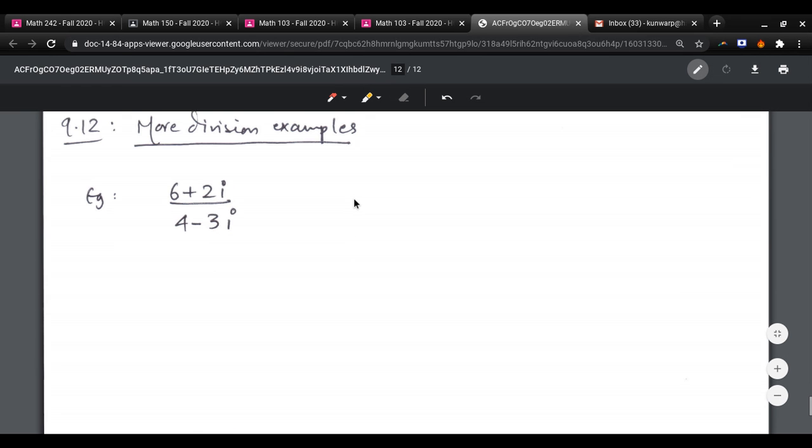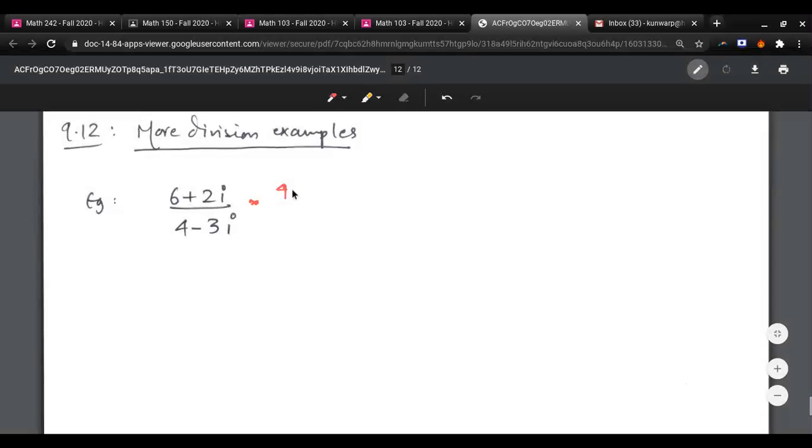Let's do some more efficient examples here. So, the conjugate is 4 plus 3i over 4 plus 3i. Now, you already know that a minus bi times a plus bi is always going to give you a squared plus b squared. So, you just have to worry about the numerator. So, you have 6 plus 2i, 4 plus 3i. That's going to be 4 squared plus 3 squared.